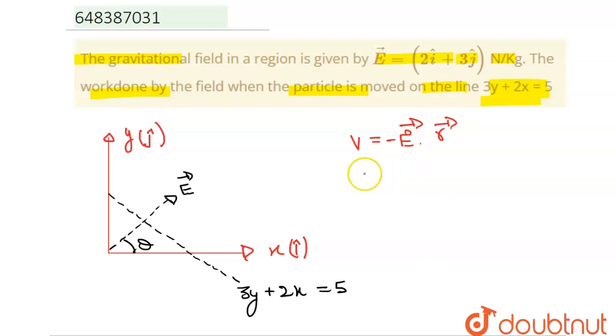Work done equals M into Del V. This is only possible when the electric field is perpendicular to the R vector. And since Del V equals 0, that will mean work done equals 0 as well.